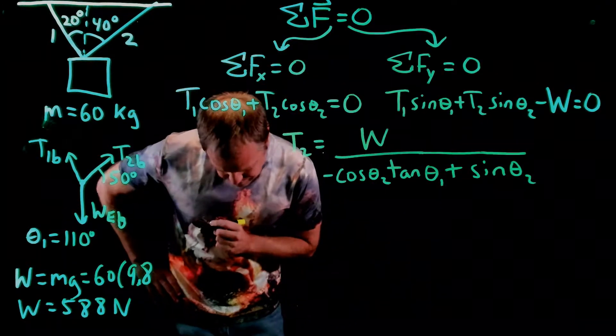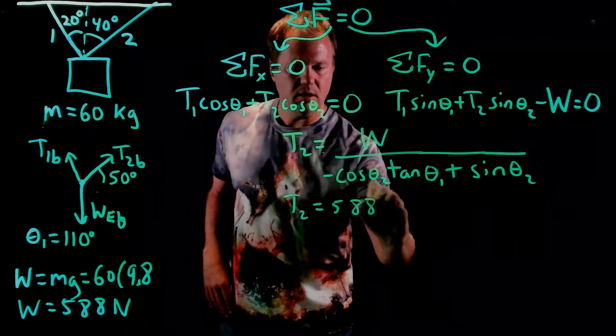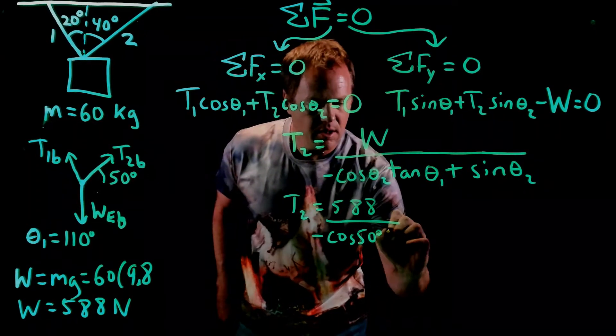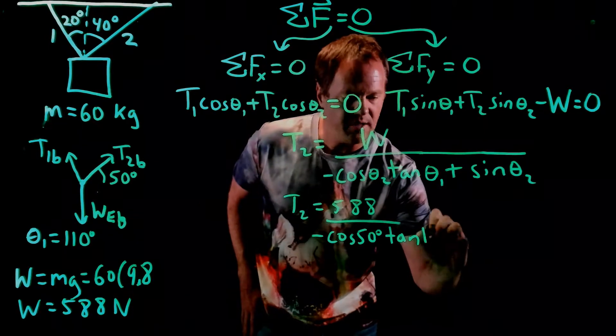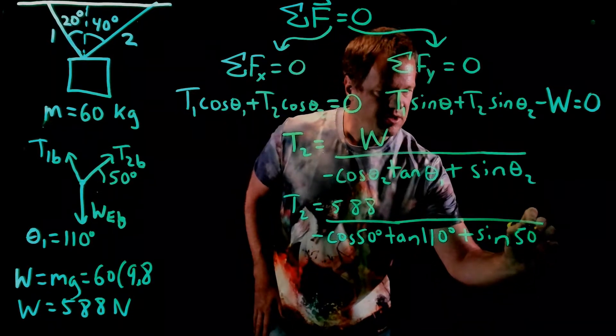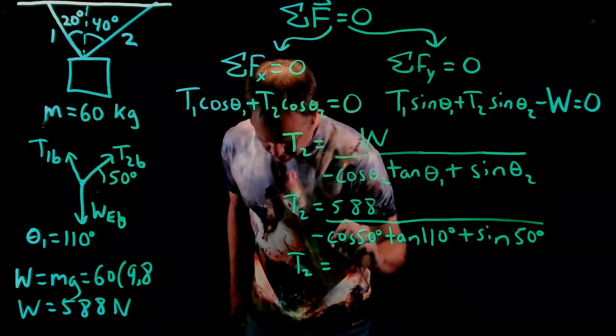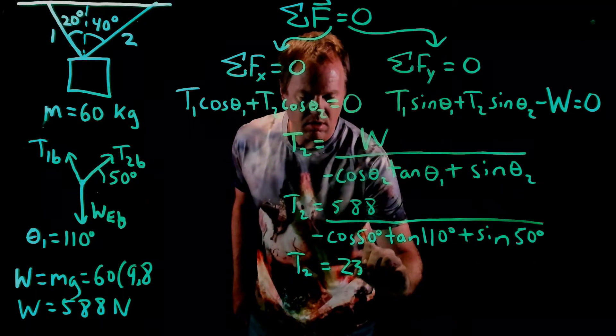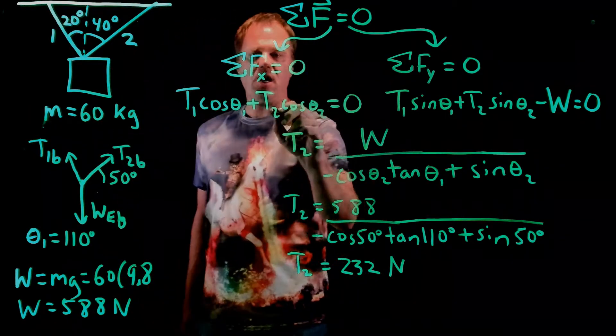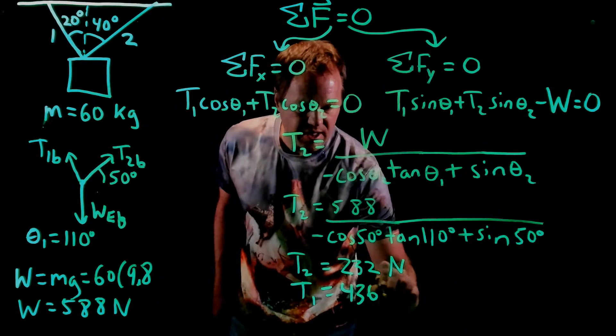When I throw in the numbers, let's do that. So 588 over minus cosine theta 2, which is 50 degrees, tangent of theta 1, which is 110, plus sine of theta 2, which is 50 degrees. I throw that into my calculator and it spits out 232. Then you can take that and throw it into here and solve for T1 and get an answer of 436 newtons.